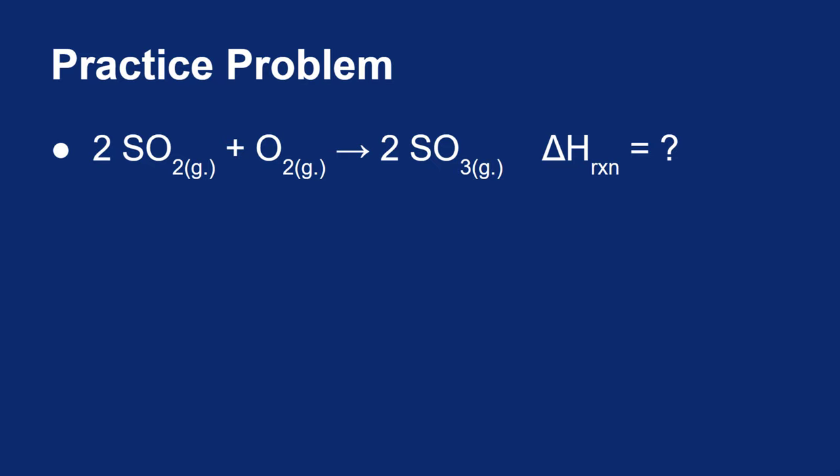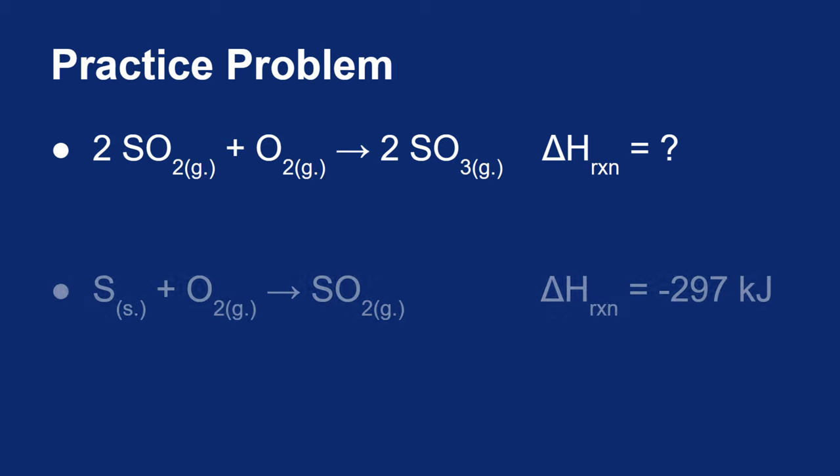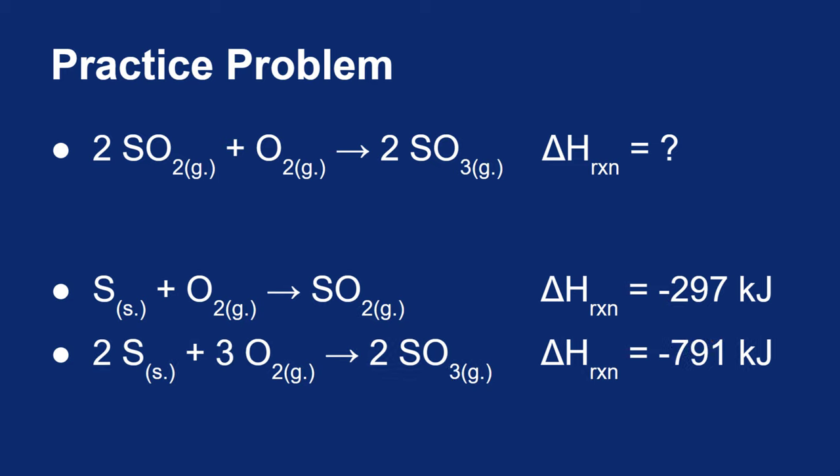We're given two pieces of information. First, we're given this reaction: if you take sulfur and combine it with oxygen, you'll make sulfur dioxide gas, and the ΔH for that reaction is −297 kilojoules. We're also given that two moles of sulfur will combine with oxygen gas to make sulfur trioxide, and the ΔH for this reaction is −791 kilojoules.